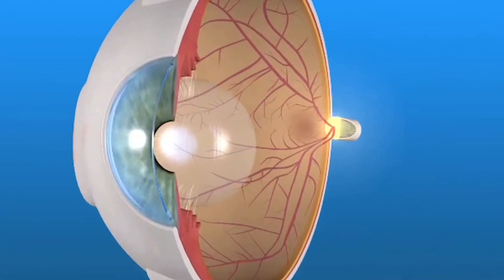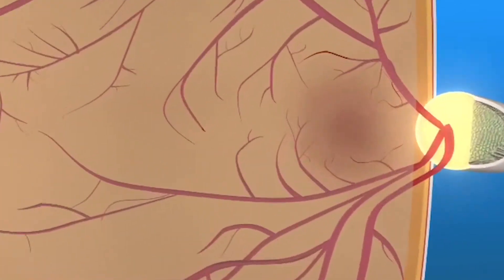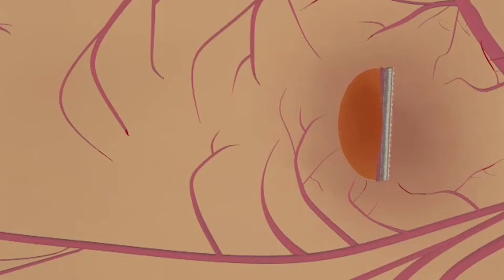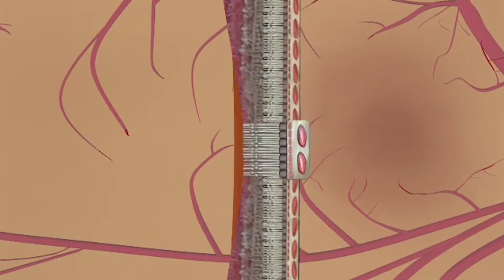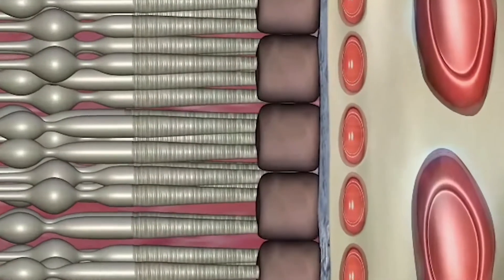Stage one is early AMD. People with early AMD have in one or both eyes either several small drusen or a few medium-sized drusen. These people do not have vision loss from AMD.